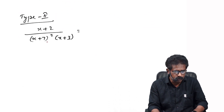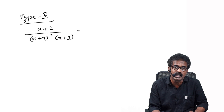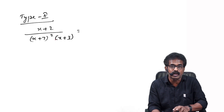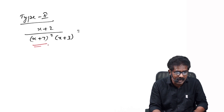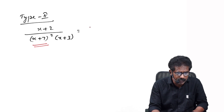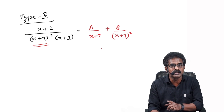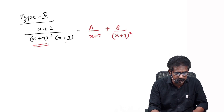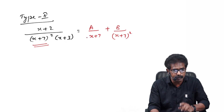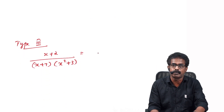Now the second type: consider (x+2) over (x+7)²(x+3). There is a whole square, which makes it different from the first type. For the squared factor, you write two terms: A/(x+7) plus B/(x+7)². If it were a cube, you'd write three terms. There is still the remaining linear factor (x+3), so you add C/(x+3). This is the second type.